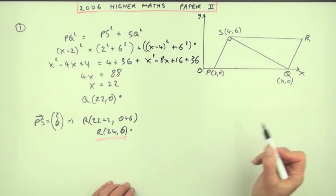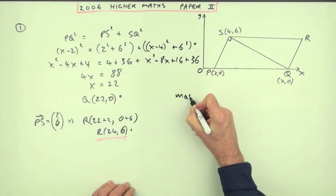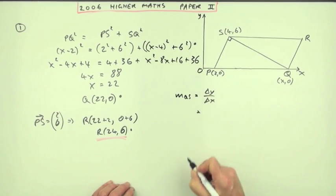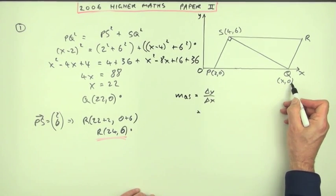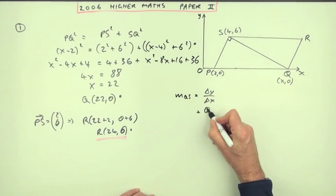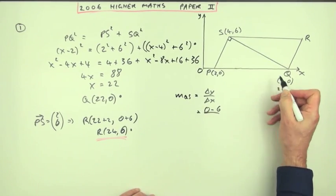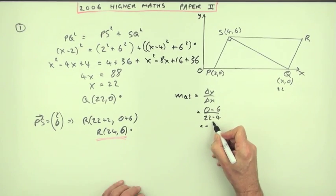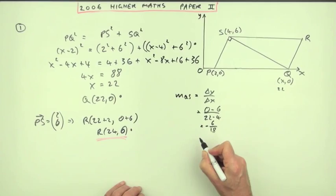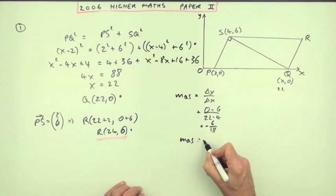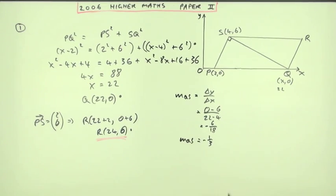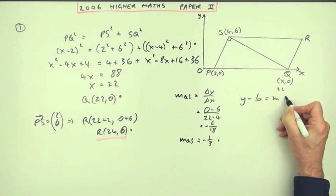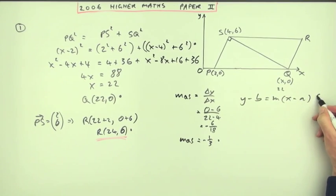And then you can get SQ directly, so you'd find the gradient of QS, difference in Y, difference in X. Y coordinates, 0, take away 6. X coordinates, 22, remember, take away 4. So that's negative 6 over 18. So QS is negative 1 third. For a mark, Y minus B equals MX minus A, using the point, well, you could use either point now, so it's better off using this point, because it's got a 0 in it, 22,0.